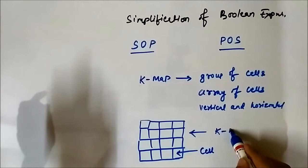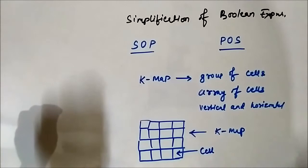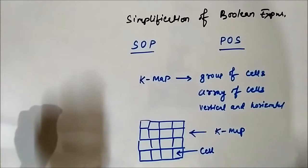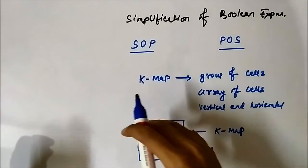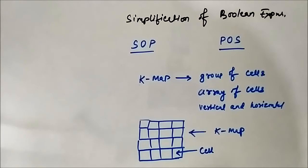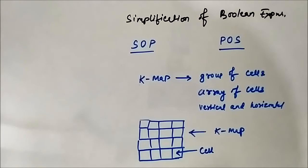There are some rules related to how many cells should be accommodated in a Karnaugh map, how to map or convert the Boolean expression we have and represent it on the Karnaugh map, and how to form groups of cells. All of this is what is involved in Karnaugh map simplification, and we'll discuss them one by one.